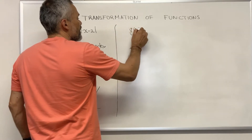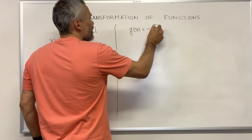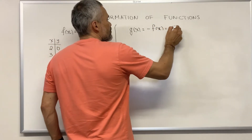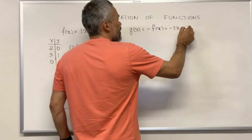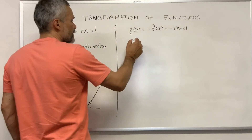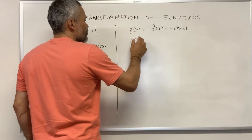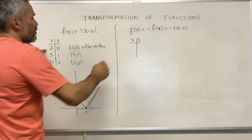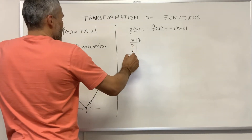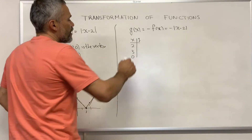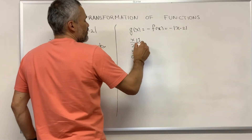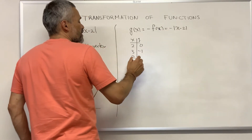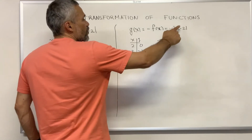Starting with this function, let's think about g of x equal negative f of x. In this case, this function is just negative absolute value of x minus 2. We can take some values by selecting the same x-inputs used for f: 2, 3, and 0. When we replace x with 2 we get 0; when we replace 3, absolute value of 3 minus 2 is 1, so the result is negative 1.